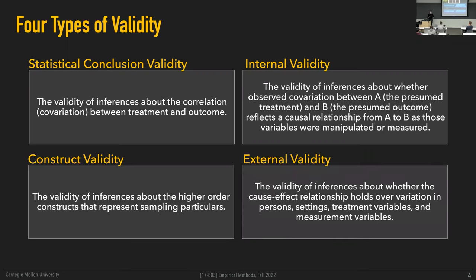Finally, external validity: ideally you would want to generalize the claims you're making in your particular study setting to a more general context. If I show an effect of using Copilot on computer science PhD students at CMU, would that hold in general for programmers anywhere? Ideally I would want to make claims that impact more than just CMU CS PhD students, but maybe those are the only people I have a chance to study. The question is to what extent I can actually generalize what I'm observing on this particular sample to other groups.